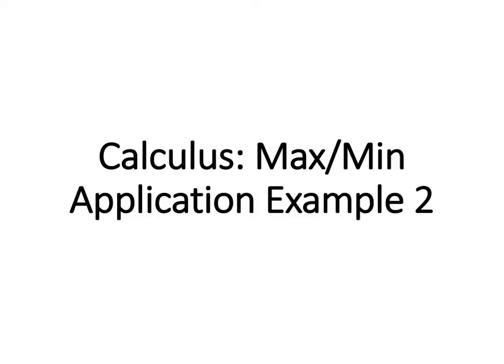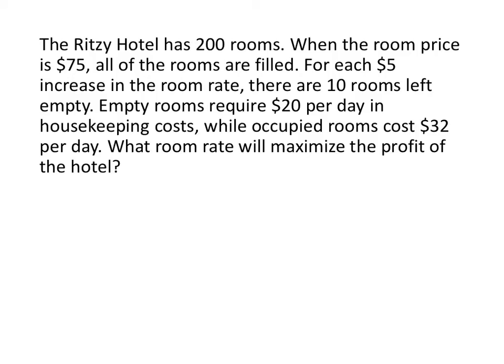In this video, we'll work on an example of a MaxMin application problem. So here's the problem. We've got a hotel that has 200 rooms. When the price is set at $75, they fill up all the rooms. But every $5 they increase the price, they get 10 rooms left empty. And there's costs indicated for empty rooms and also occupied rooms. And we want to know what price for the room will maximize the profit.